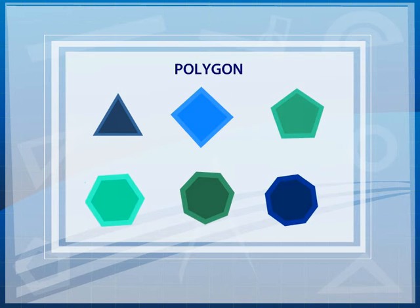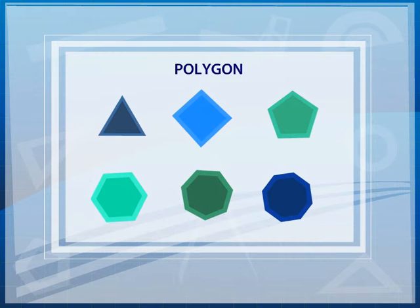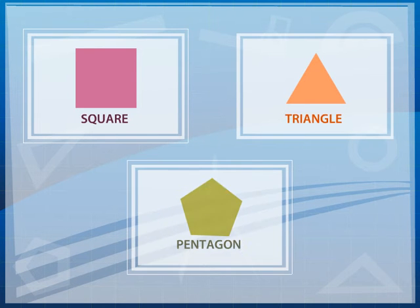As we know that polygons are closed figures made up of only line segments. Thus, all polygons as square, triangle, pentagon, etc. are examples of rectilinear figures.